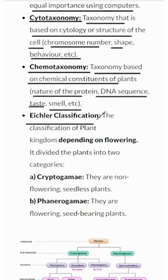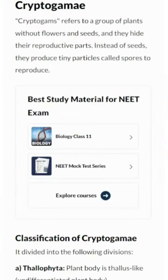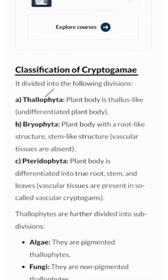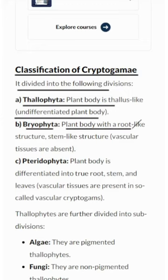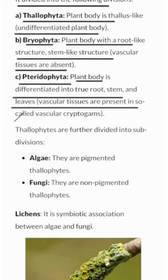Eichler's classification is another milestone in plant taxonomy, focusing on whether plants produce flowers or not, dividing plants into two categories. Cryptogamy: these plants don't produce flowers or seeds; instead, they reproduce using spores. Cryptogamy is classified into Thallophyta, which have an undifferentiated plant body; Bryophyta, with root-like and stem-like structures but no vascular tissues; and Pteridophyta, which have a fully differentiated body with true roots, stems, and leaves, and possess vascular tissues.